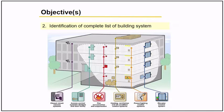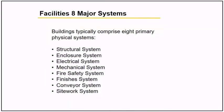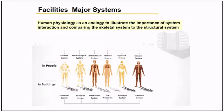Here are the facility's eight major systems. The building comprises eight primary physical systems: structural, enclosure, electrical, mechanical, fire safety system, finishes, conveyor or lift system, and site work. These systems were compared to human physiology to illustrate the importance of each system.